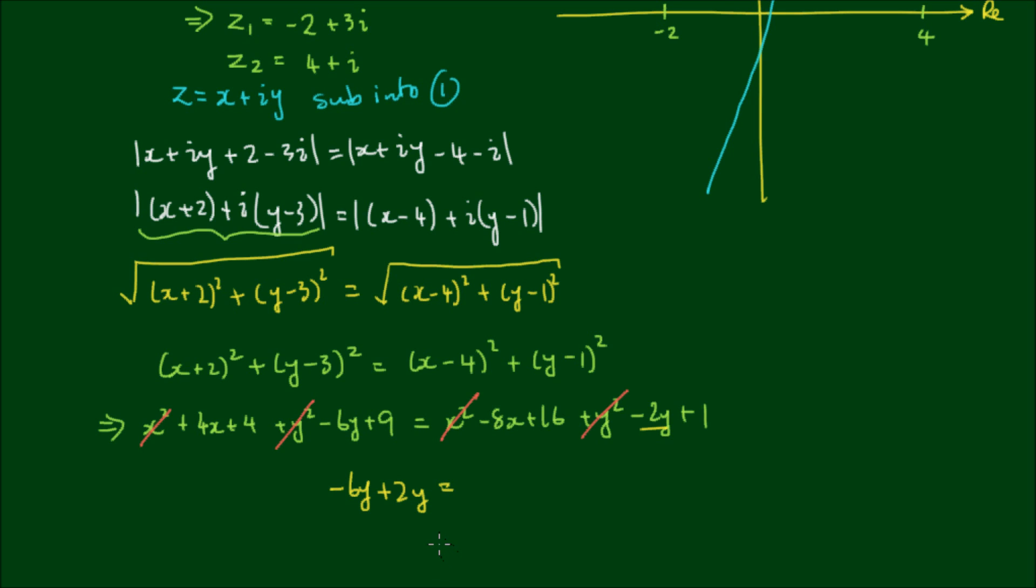So on the left hand side I get -6y. The 2y over here comes over to become a positive 2y. And this is equal to -8x. The 4x over here becomes a -4x on the right hand side. The +16 remains as it is. The 9 comes over to become a -9. The 4 comes over to become a -4. And the 1 remains as it is.